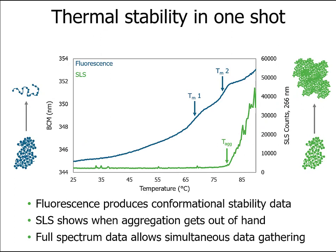UNCLE delivers on this fluorescence data simultaneously with gathering SLS data to get protein thermal stability and aggregation information in just a single experiment. Here we're looking at the results of a thermal ramp experiment where protein fluorescence is tracked in blue and SLS is in green. Fluorescence shows your proteins unfolding and quantifies that with melting temperatures at TM1 and TM2. The SLS data in green shows the aggregation behavior of your protein and reports the temperature when aggregation begins as TAG. Notice how the TAG event lines up with TM2, linking the second unfolding event to aggregation of the protein.